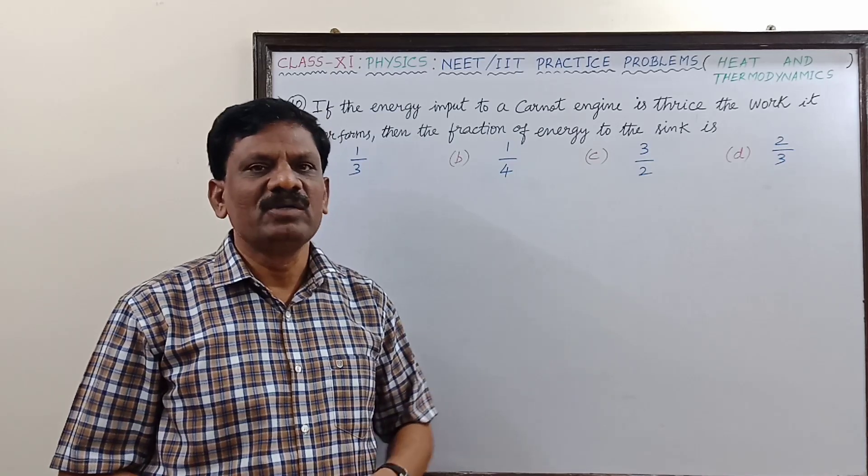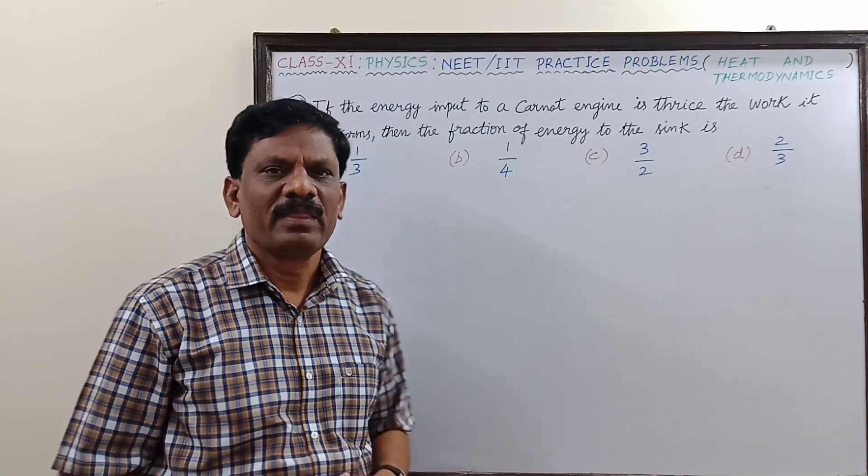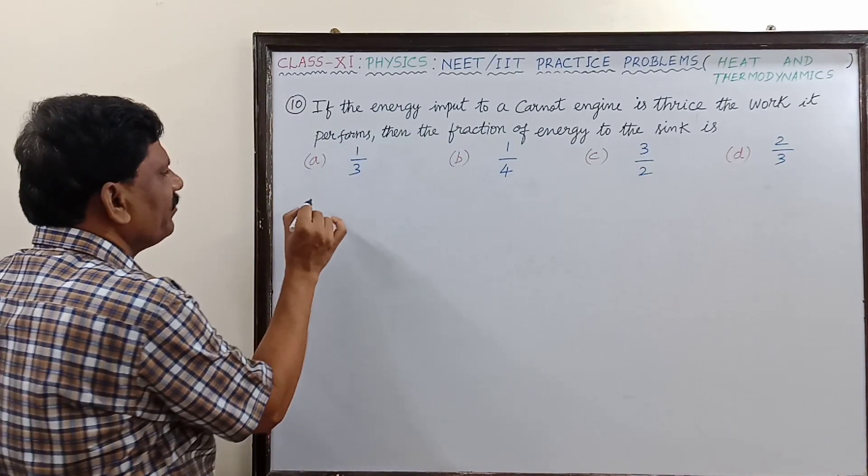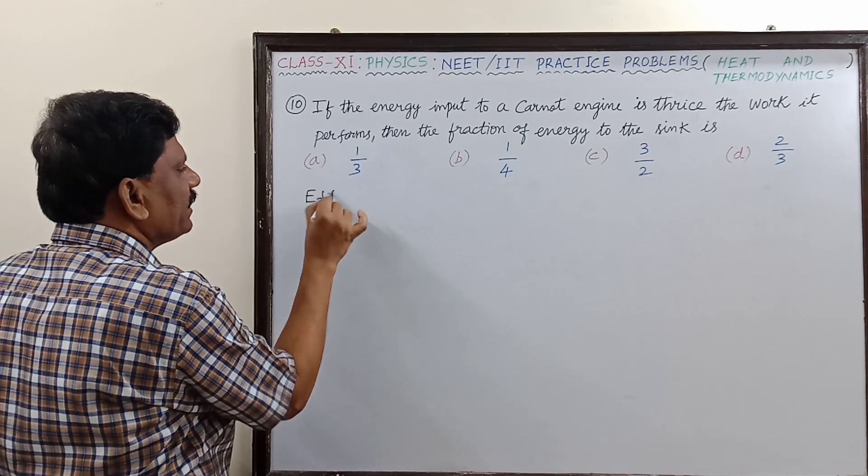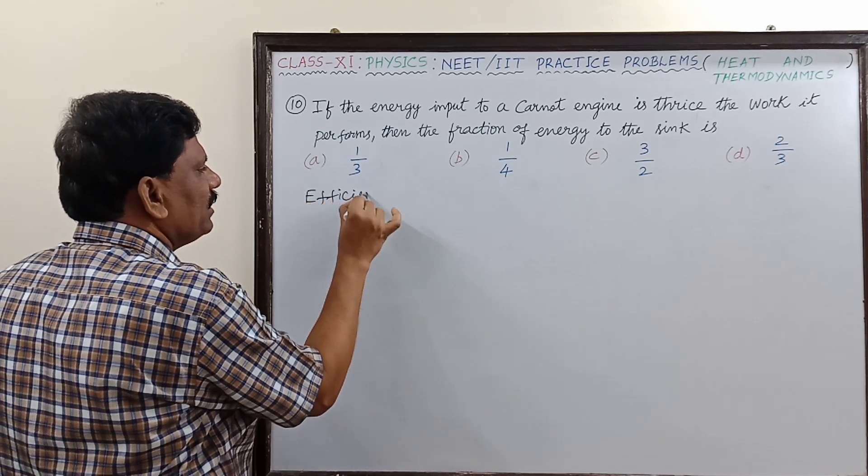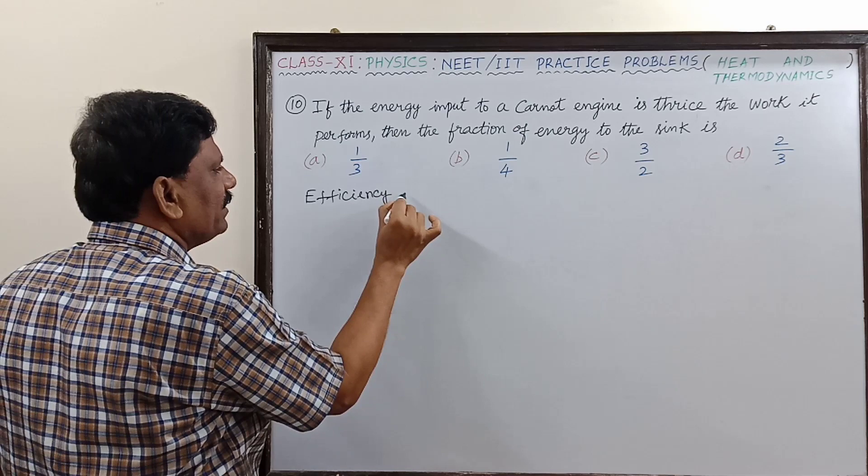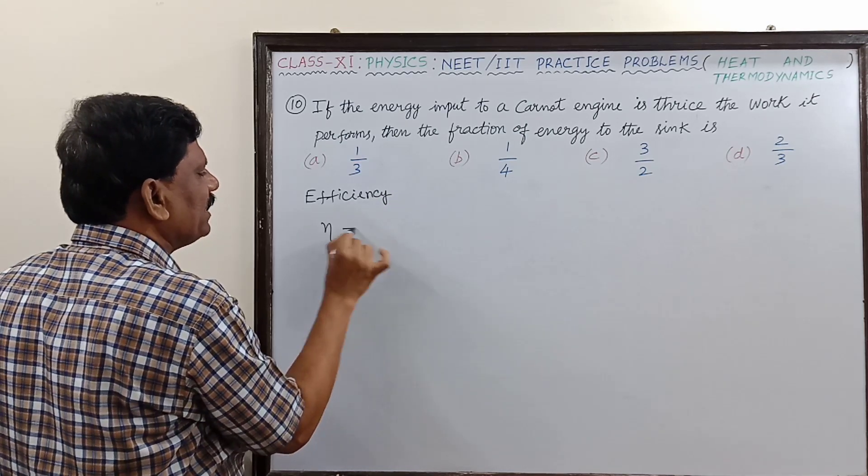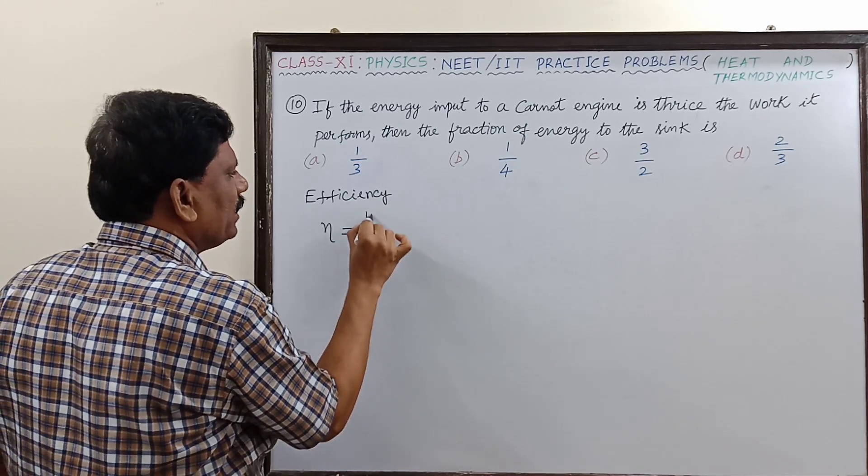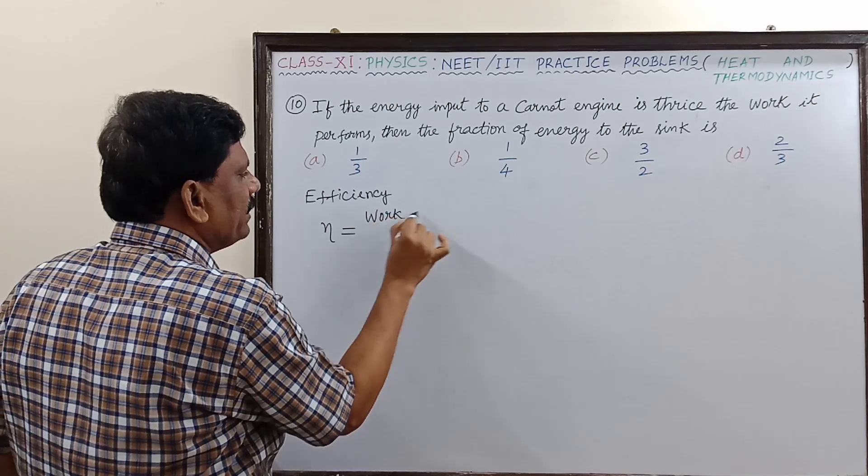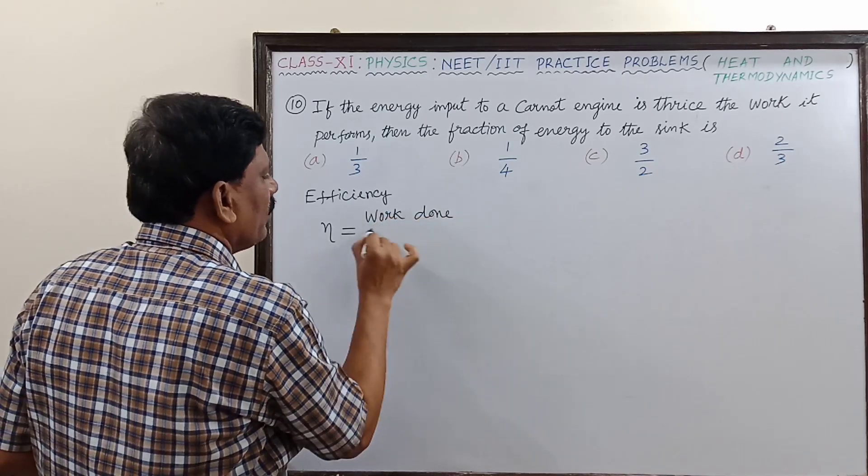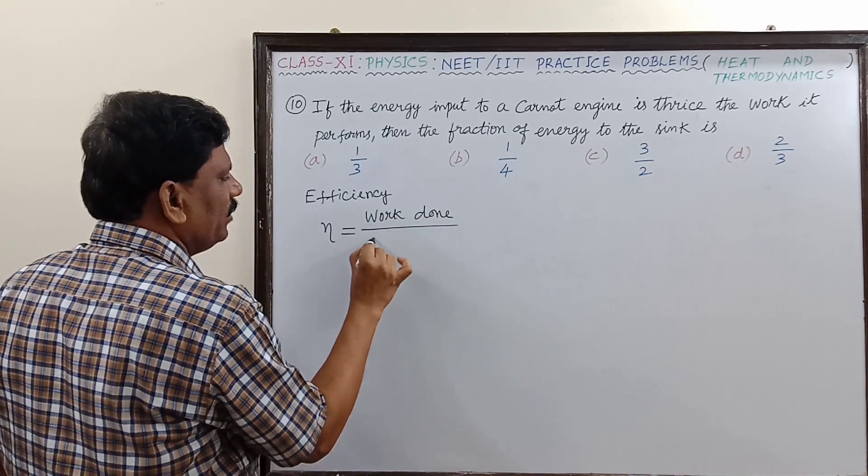Now for a Carnot engine, the efficiency is given by the symbol eta. Efficiency eta is equal to the work done by the engine to the input energy which is given.